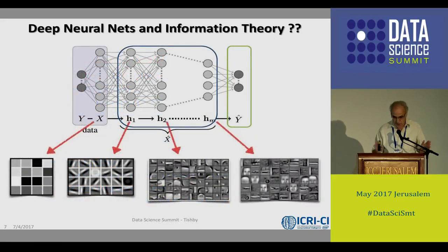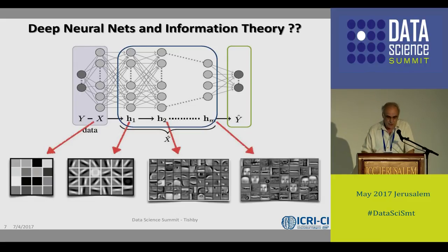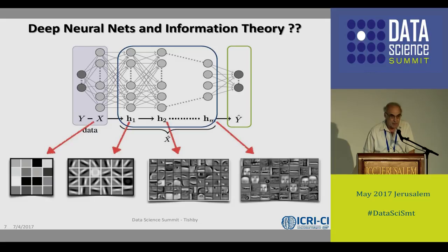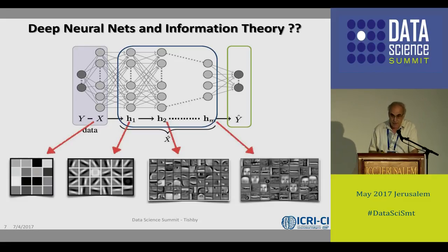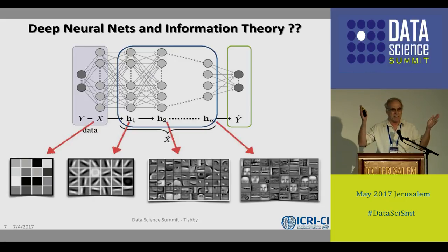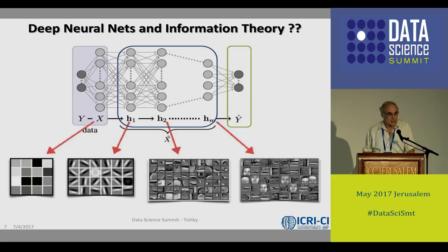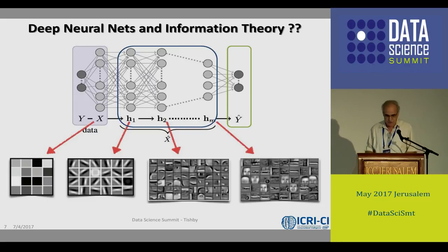So I want to introduce a line of work that I've been doing for many, many years — it became much more powerful recently because of the success of deep learning — which is the connection between information theory and neural networks. When I say information theory, most machine learning people don't see the connection. Information theory is about communication and compression — what does it have to do with machine learning or deep learning in particular? This is something I've been pursuing with a lot of good people for over many years.